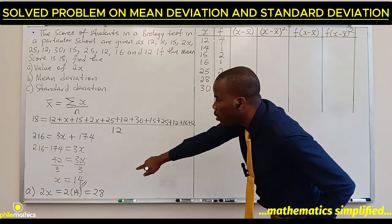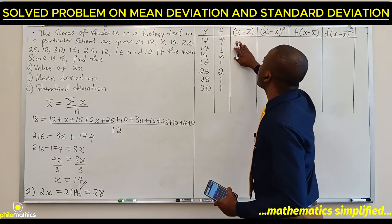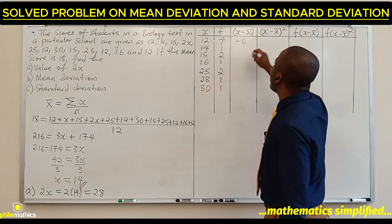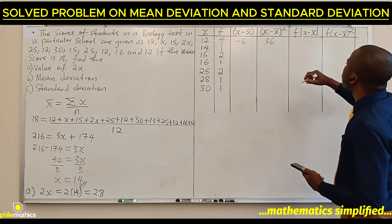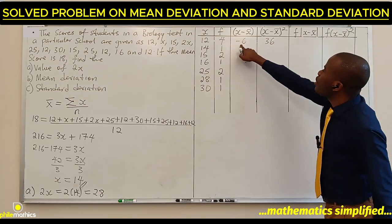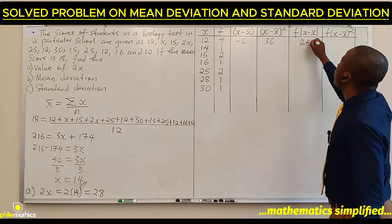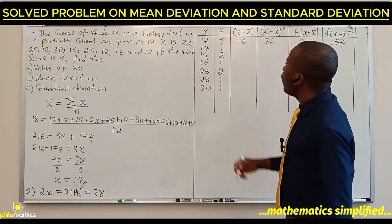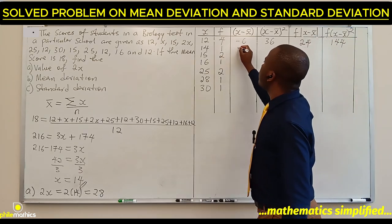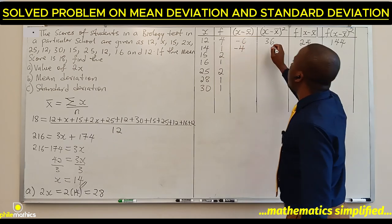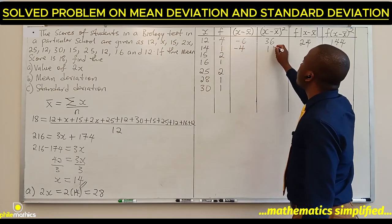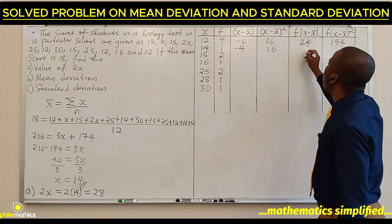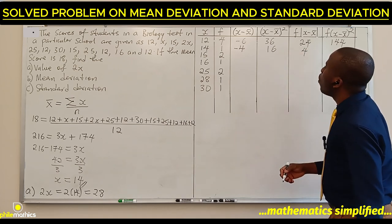x minus x-bar. Our x-bar is our mean, which is 18. 12 minus 18 is minus 6. Minus 6 squared is 36. 4 times the absolute value of this is 24, and 4 times 36 is 144. The next is 14. 14 minus 18 is minus 4. Minus 4 squared is 16. 1 times 4 is 4, and 1 times 16 is 16.